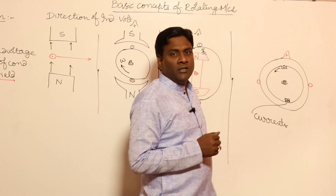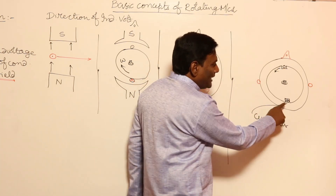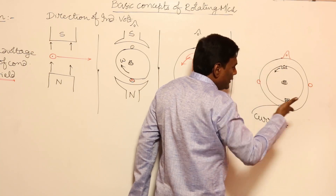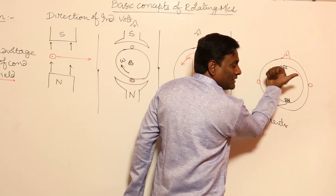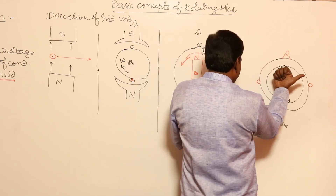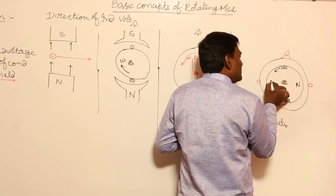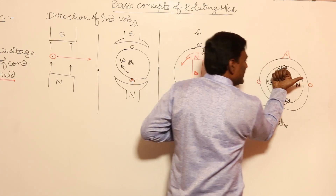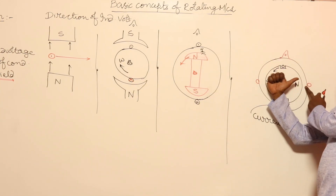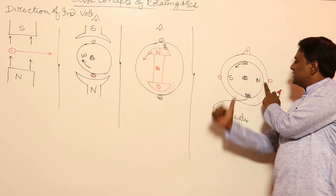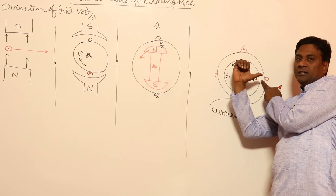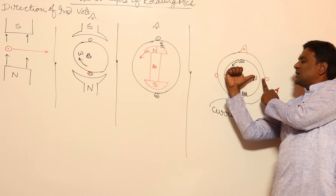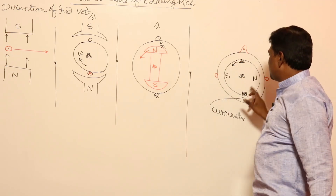Currents in the sense flux — whenever you have current, automatically flux should come. My currents are going to be cross here and dot here. So current enters here and comes out here, meaning flux will be in this direction. Now, if I sit in the air gap — flux is coming out of the rotor — so this should be N pole. Because flux is coming out of the rotor towards you when sitting in the air gap, this is N pole, and the other side is S pole.